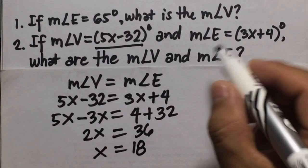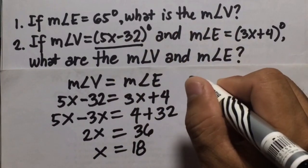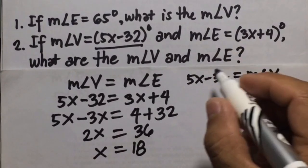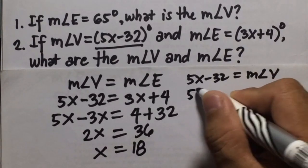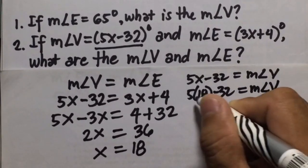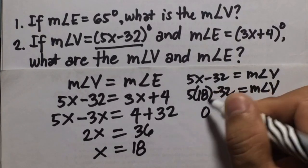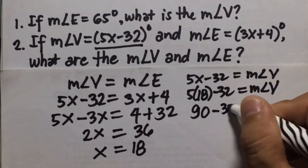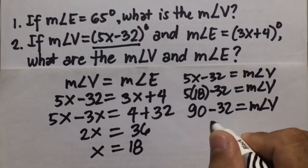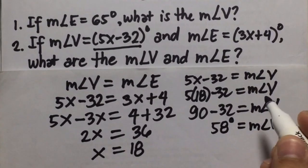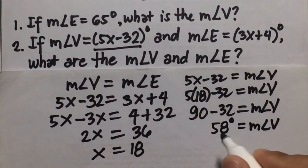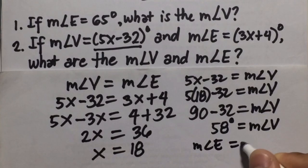To find the measure of angle V: angle V is 5x minus 32. Substituting x with 18: 5 times 18 minus 32 equals 90 minus 32, which is 58 degrees. Since measure of angle V equals measure of angle E, the measure of angle E is also 58 degrees.